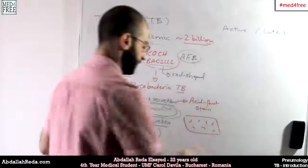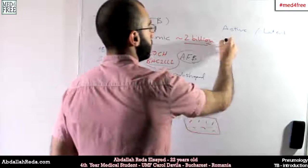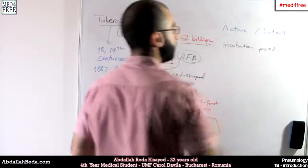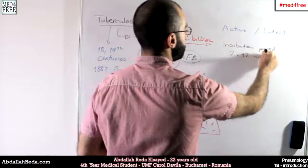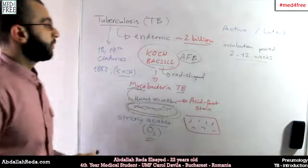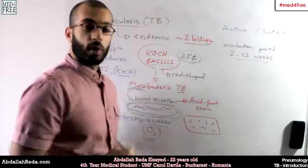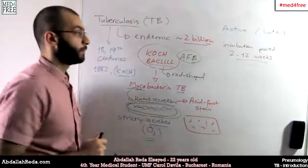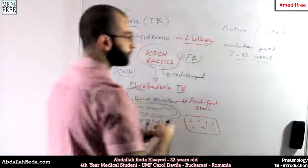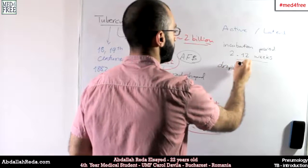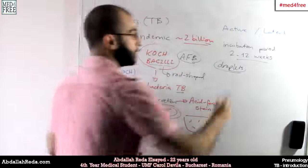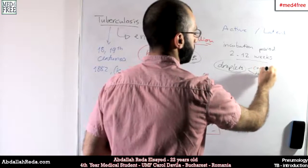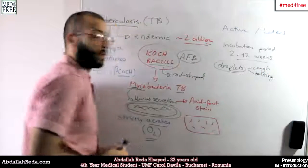The incubation period of TB is 2 to 12 weeks. When a healthy person receives the bacteria, the most common route of transmission is via droplets — through coughing, talking, and so on.